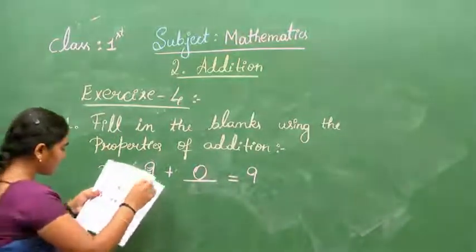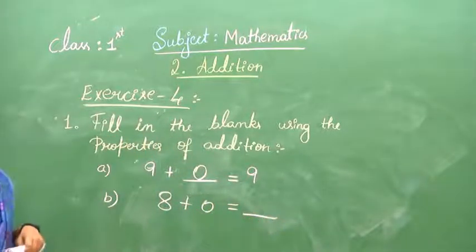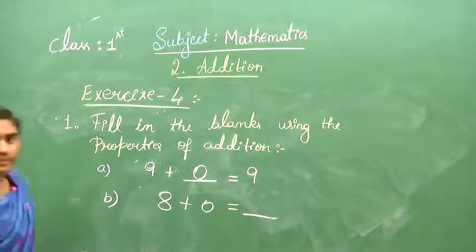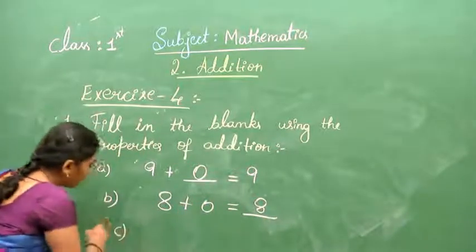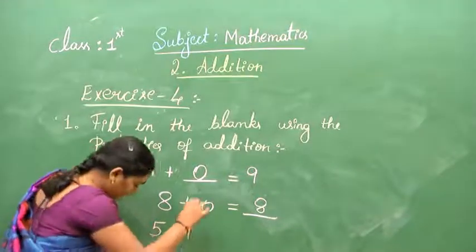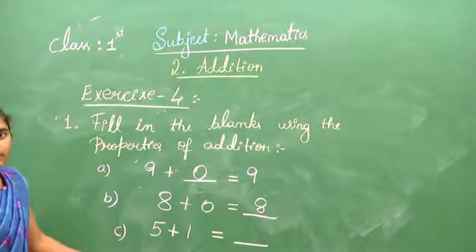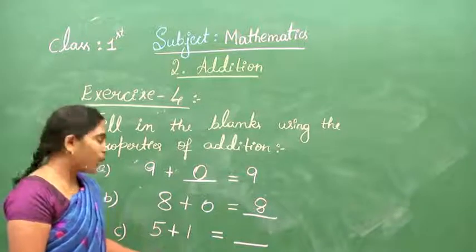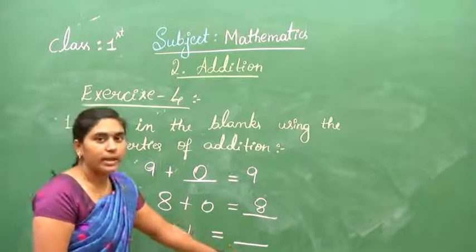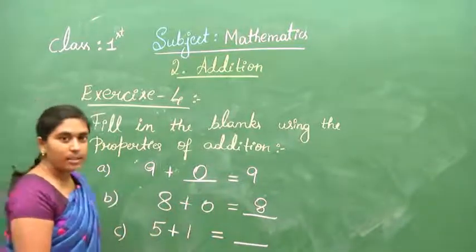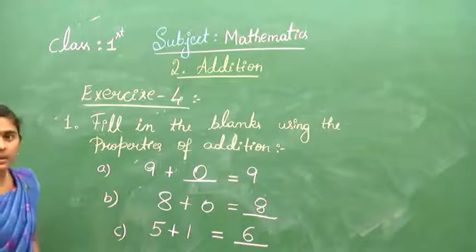The second question: 8 plus 0 equals blank. The answer is 8 only — 8 plus 0 belongs to the first property. Coming to the third one: 5 plus 1 gives blank. This belongs to the second property. Adding 1 to any number gives the next number. So the next number of 5 is 6.